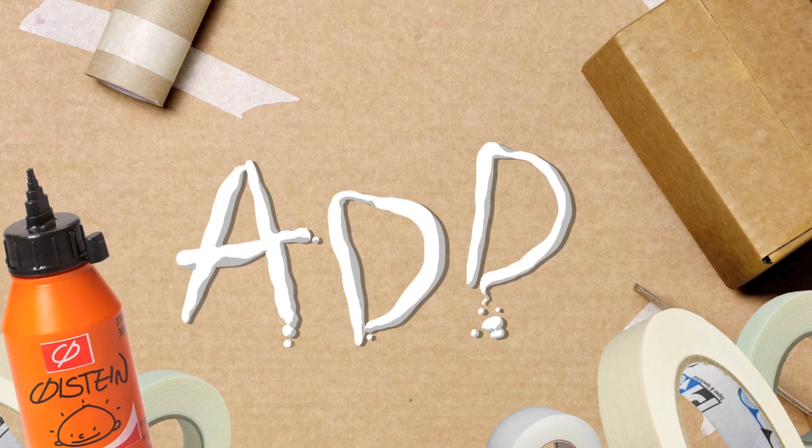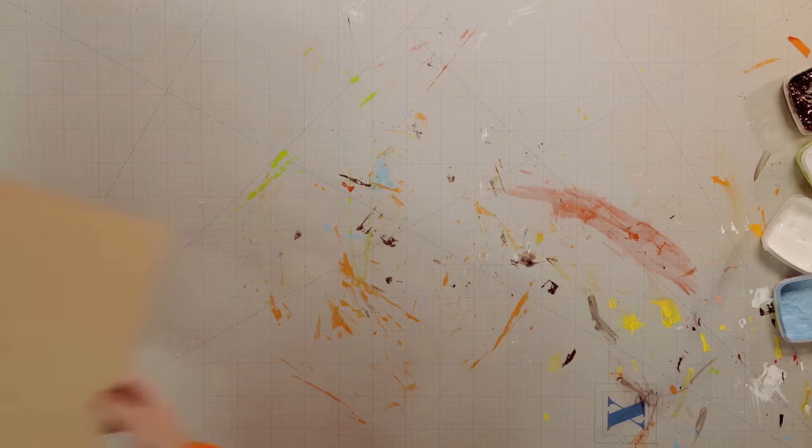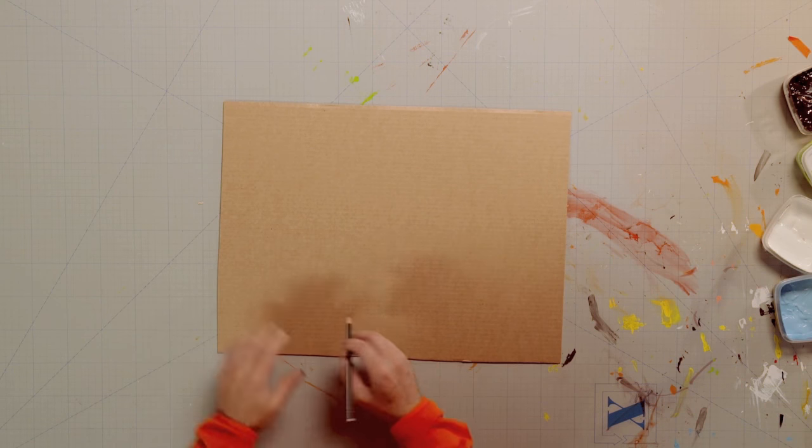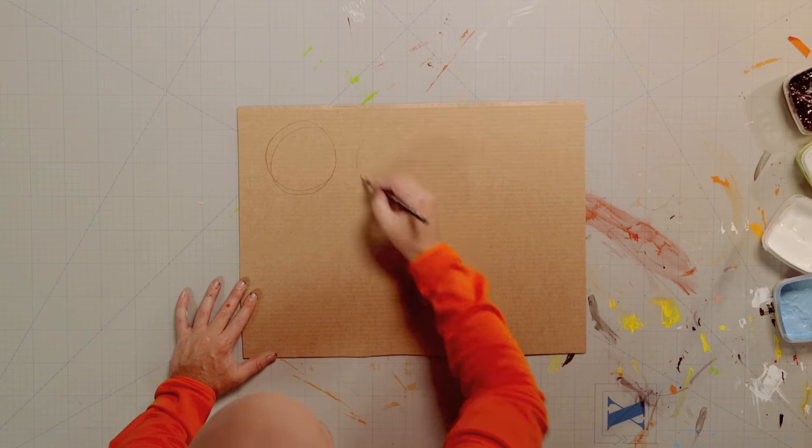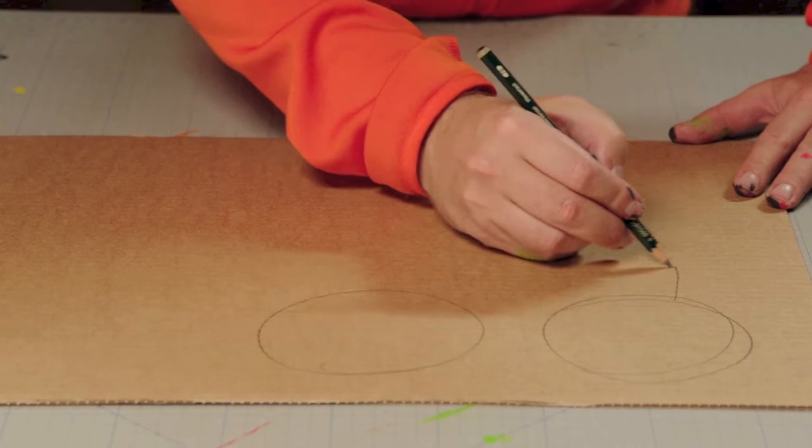Add! Start by drawing everything you need on some cardboard with a pencil. The eyes should be large and round, with flaps for glue at the bottom.